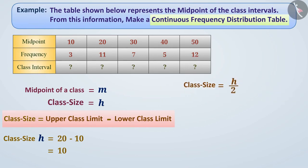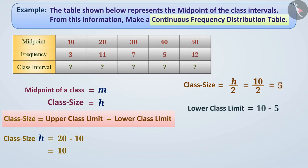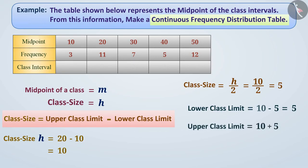If we reduce this difference to half the class size, we find the difference between the midpoint and the lower or upper class limit. H divided by 2 equals 10 divided by 2 equals 5. If we subtract this difference from the midpoint, we get the lower class limit: 10 minus 5 equals 5. Similarly, if we add this difference to the midpoint, we get the upper class limit: 10 plus 5 equals 15. In this way, we get the first class interval 5 to 15.